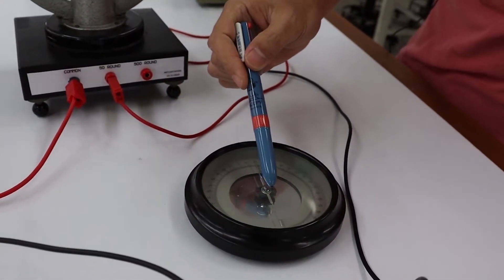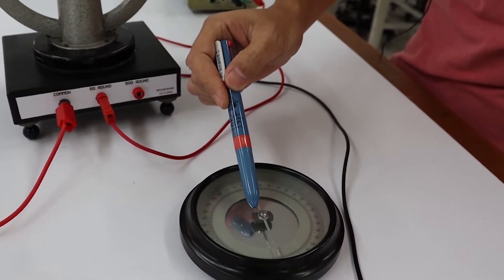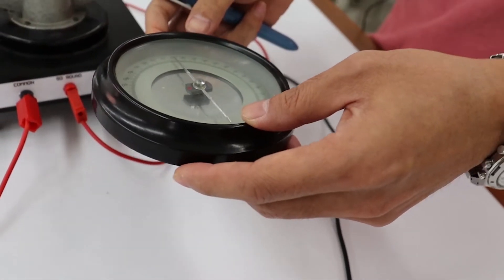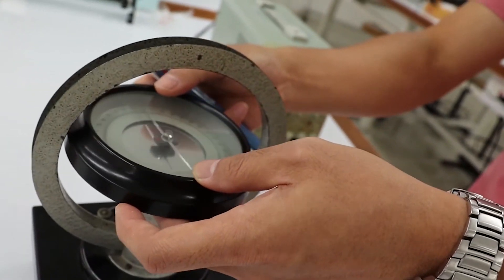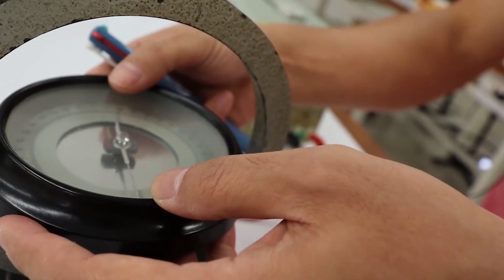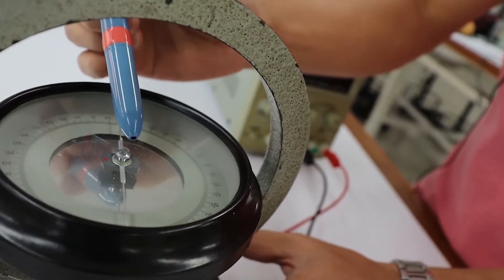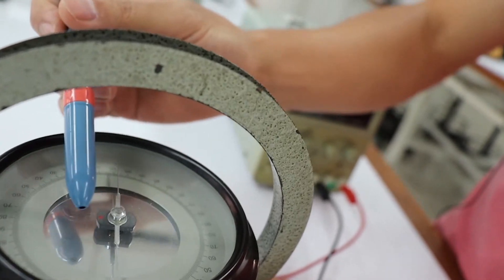After that, install the compass, place it in the center of the tangent galvanometer. Adjust the line of the wire to be parallel to the direction of the Earth's magnetic field observed by the compass.